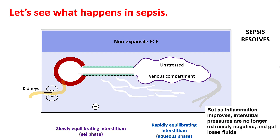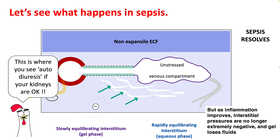Finally, as inflammation improves, interstitial pressures are no longer extremely negative, the gel phase loses fluids more rapidly, and this is when you see autodiuresis — if the kidneys are functional.